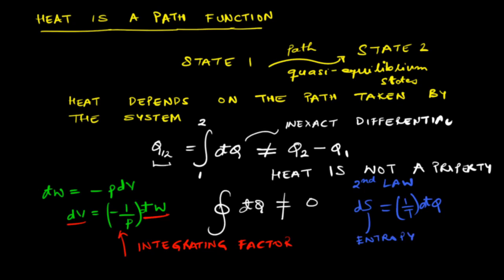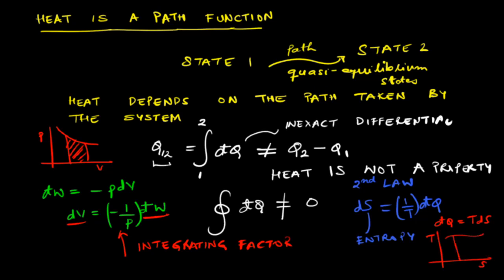Just to show the similarity of heat and work: the integrating factor for heat is 1/T, where T is temperature. Multiplying dQ by 1/T gives the exact differential dS, where S is called entropy, as we will see in our discussion of the second law. Just as work P dV can be described as the area under a path on a P-V diagram, dQ = T dS means that heat transfer can be visualized as the area under the path on a T-S diagram.